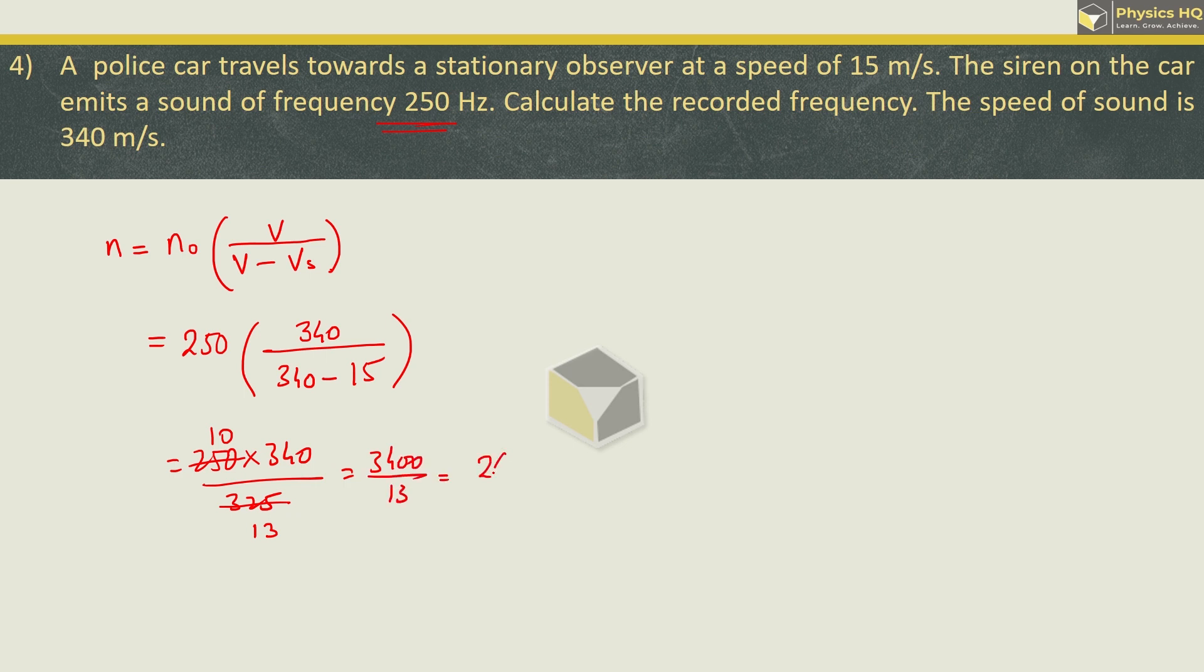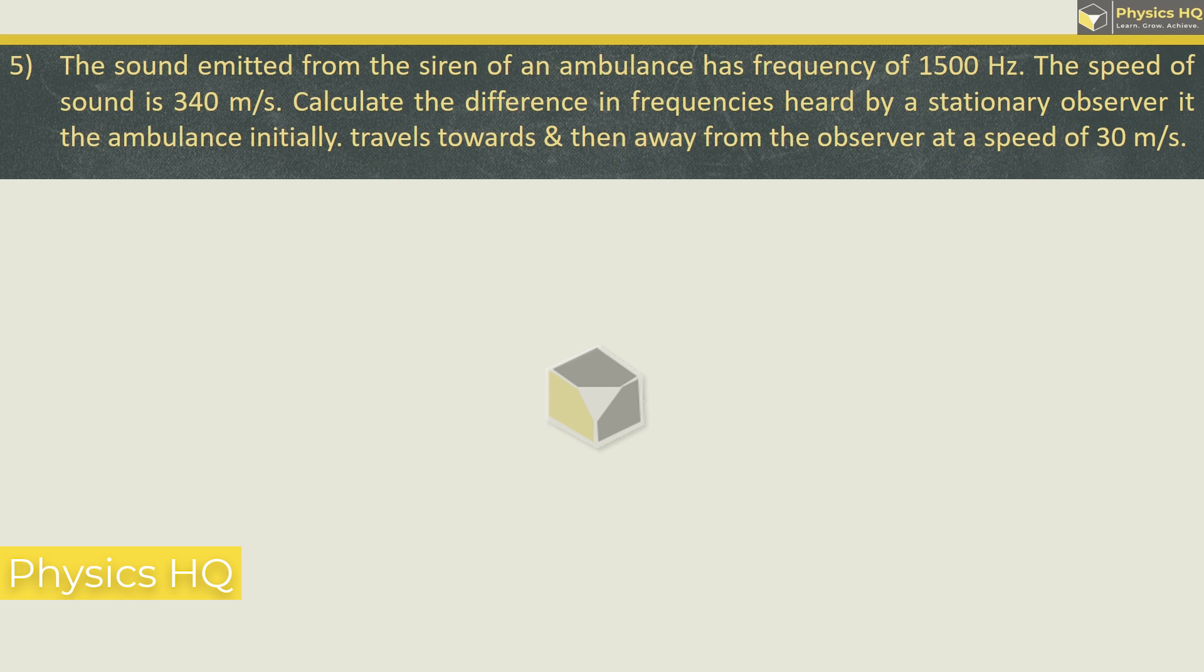Next problem. A sound emitted from a siren of an ambulance has frequency of 1500 hertz. The speed of sound is 340 meter per second. Calculate the difference in frequency heard by a stationary observer if the ambulance initially travels towards and then away from the observer at a speed of 30 meter per second.